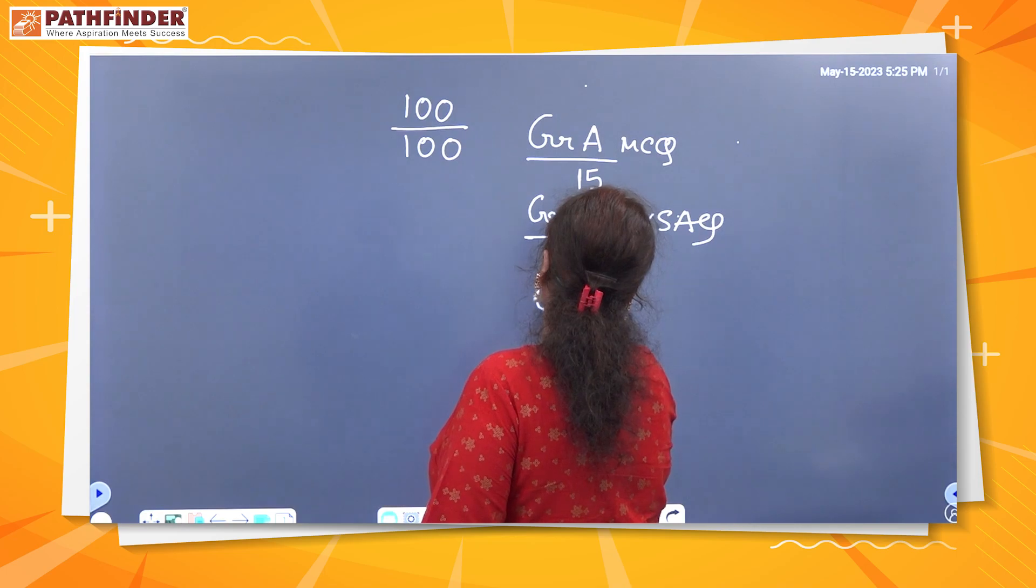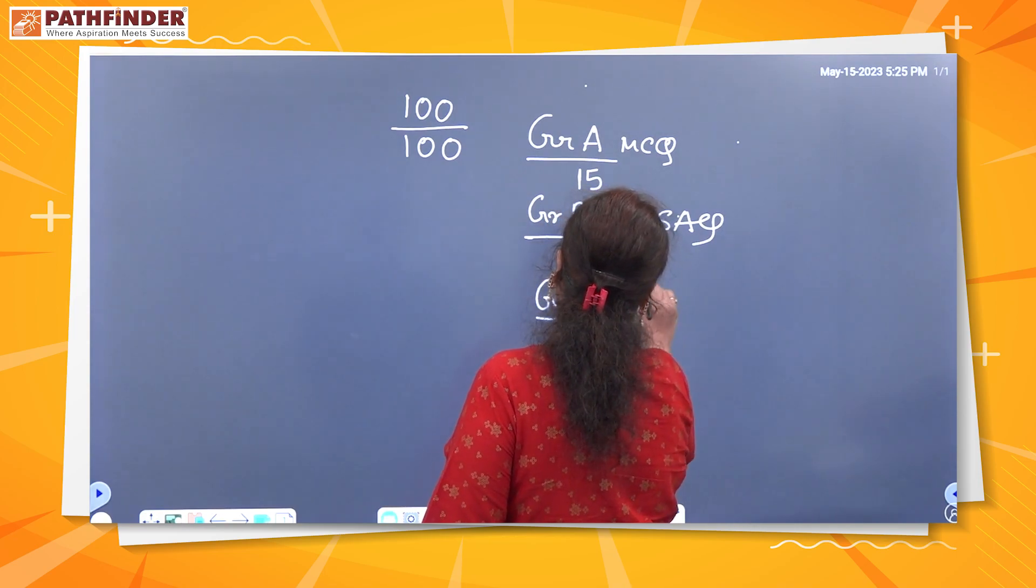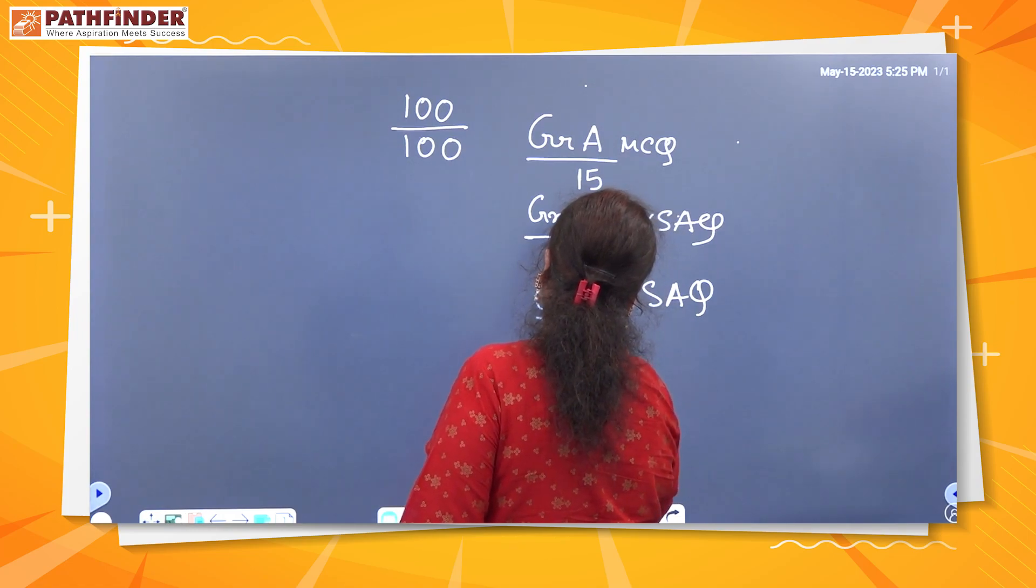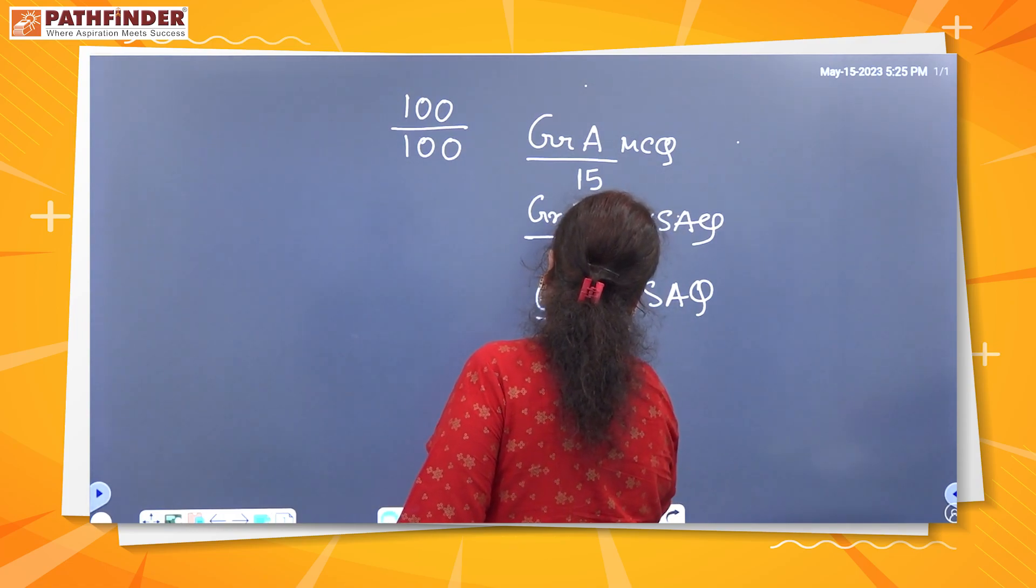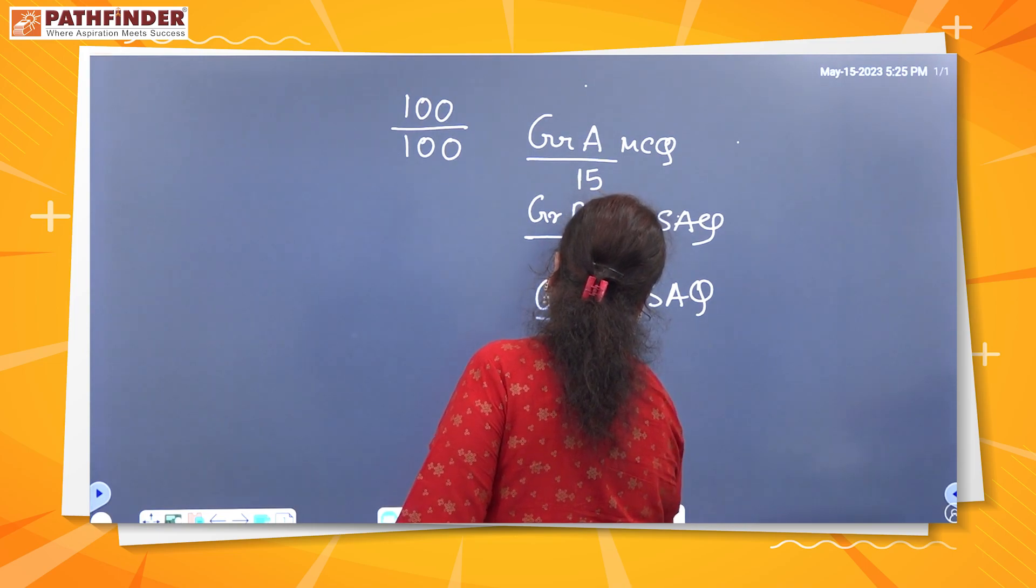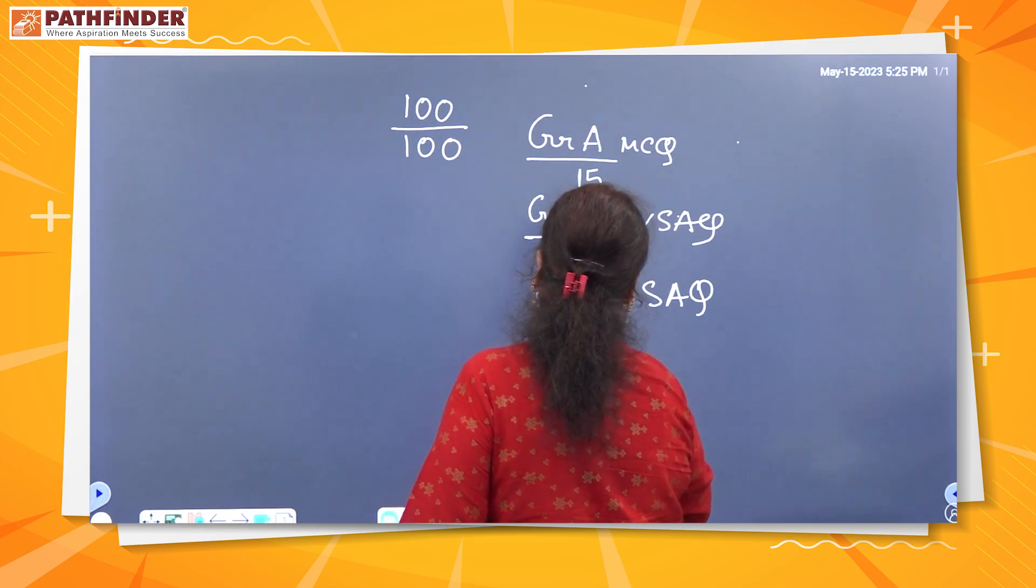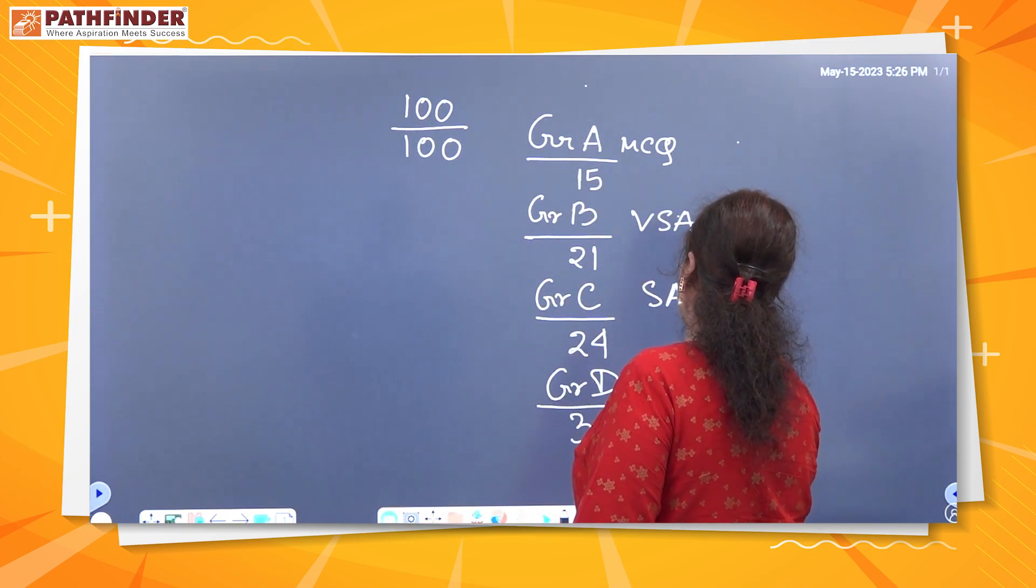Then there is Group C, SAQ marks 24. And last is Group D where marks are 30. We call it LAQ.